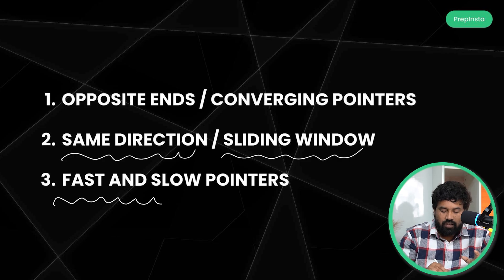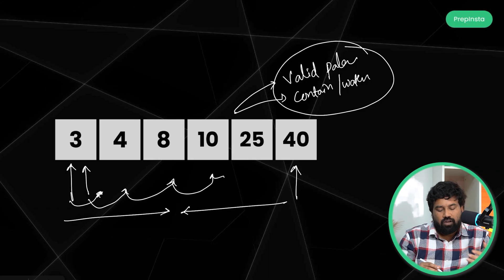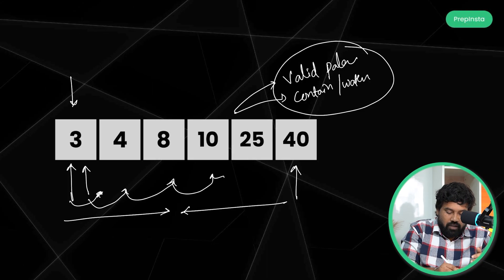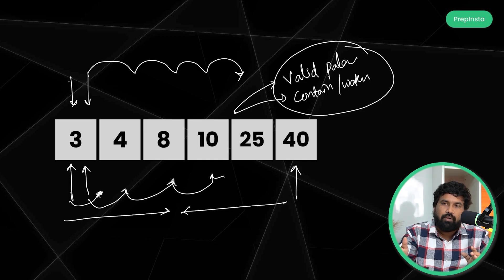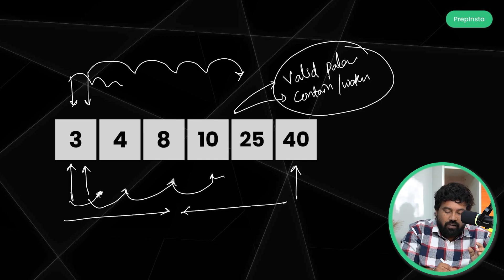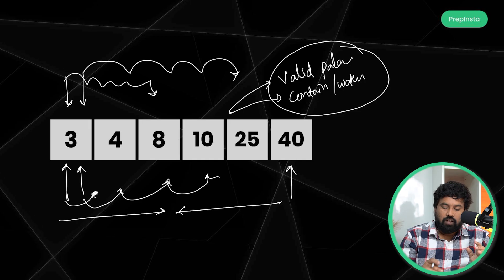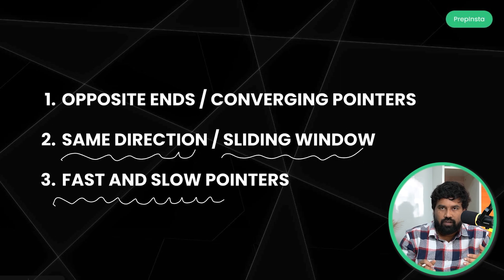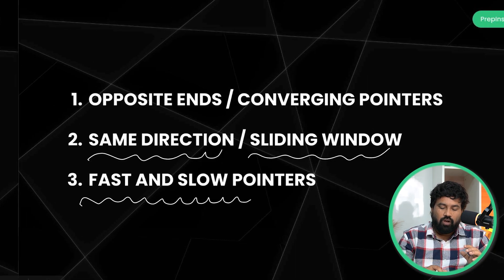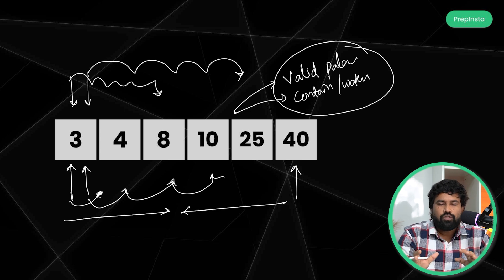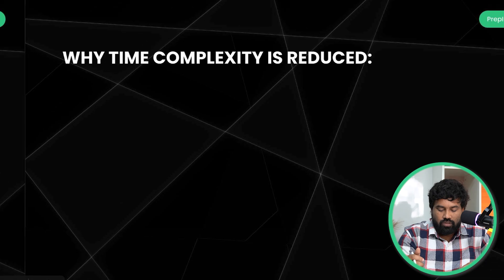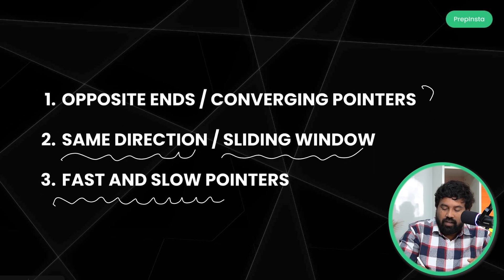I'm not going to talk about the sliding window concept in this video — I'll cover that in a separate video. The next type is fast and slow pointers, where both pointers start from the same place but one pointer moves quickly, jumping positions rapidly, while the other moves slowly. We'll see all these examples in future videos.